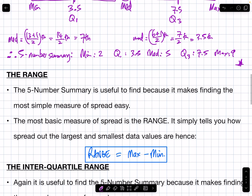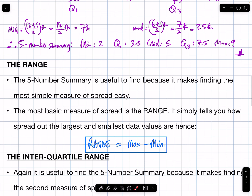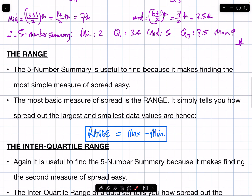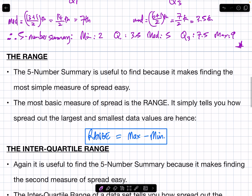Your textbook goes straight to this — it tells you to find the range and the interquartile range, which are two measures of spread you're supposed to be aware of. The five number summary is useful to find because it makes finding measures of spread easy. The most basic measure of spread is the range — it simply tells you how spread out the largest and smallest data values are. Hence, the range is the max minus the min.